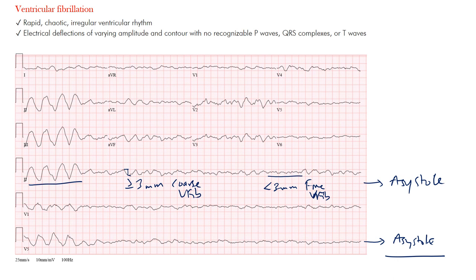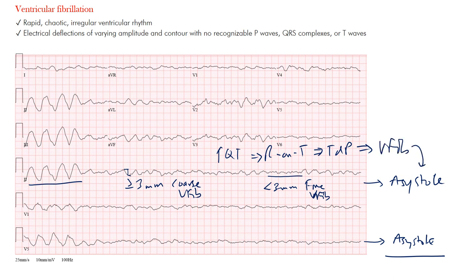What causes v-fib? Myocardial ischemia or infarction, cardiomyopathies, channelopathies — problems with sodium or potassium channels as seen in some inherited disorders — aortic stenosis or dissection, myocarditis, cardiac tamponade, blunt trauma, tension pneumothorax, pulmonary embolism. A prolonged QT interval can cause an R-on-T phenomenon, resulting in torsades de pointes — twisting on the points — and then eventually into v-fib and possibly asystole. Sepsis and even hypothermia can also cause this.